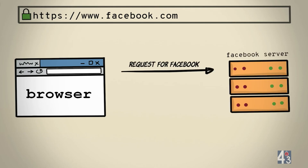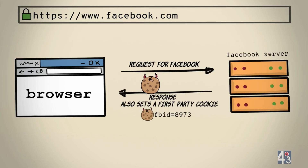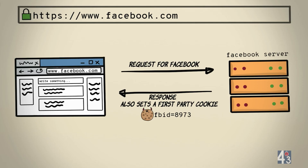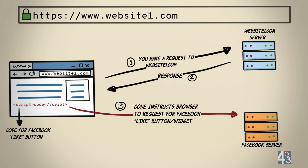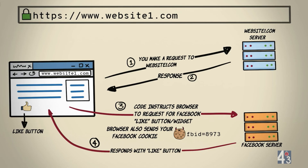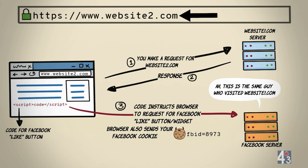Let's say you create or register an account on Facebook. Once you do this, you are assigned a first-party cookie by Facebook that is unique to you. After this, you open WebsiteOne.com, which has a Facebook like button on its page. On rendering the website, the code snippet embedded to render the Facebook like button instructs your browser to make a request to Facebook servers. When doing this, your browser sends your Facebook cookie along with the request. The Facebook server responds, the like button is displayed, and this way Facebook builds a browsing profile of you and knows you browsed WebsiteOne.com.